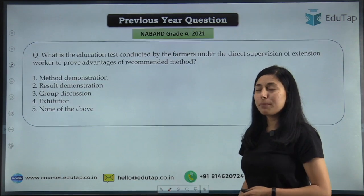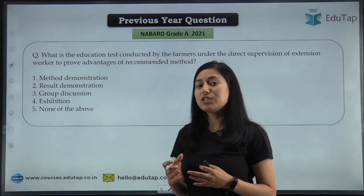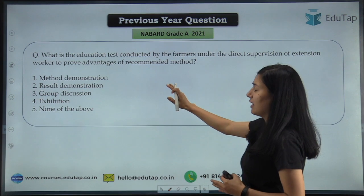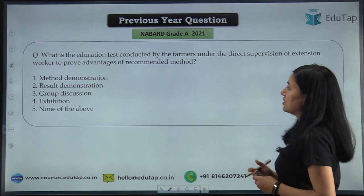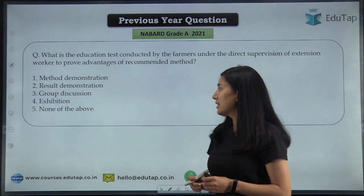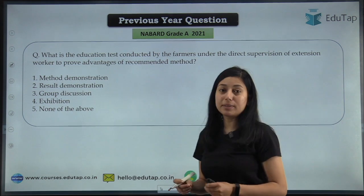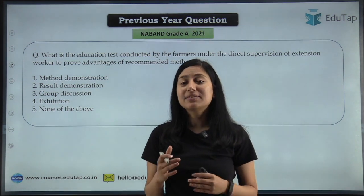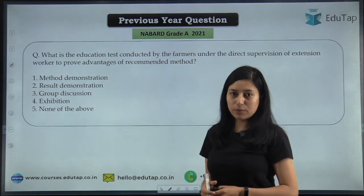Now moving on to today's topic. The question asked in your Nabard exam is: what is the education test conducted by farmers under the direct supervision of an extension worker to provide advantages of recommended methods? Options are method demonstration, result demonstration, group discussion, exhibition, or none of the above. Students, if you know the answer, well and good — but if you don't, let us first discuss what all these are and then try to answer this question.